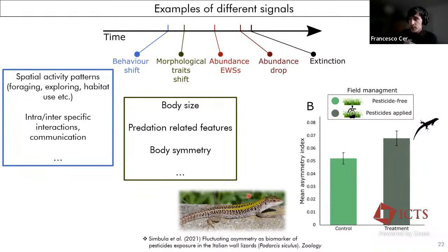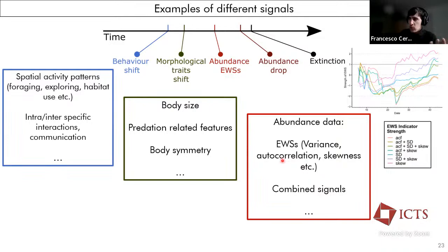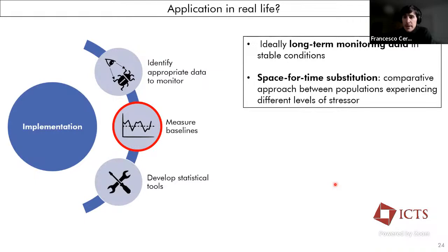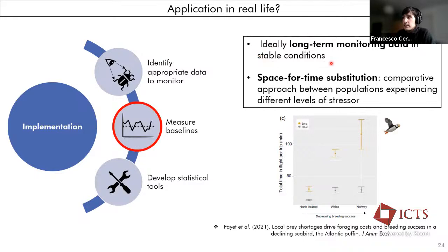As for the abundance-based early warning signals when present, we know that there are some general ones, but we can also use some combined signals by summing up the different statistical indicators. Now, another important thing to do is measure the baselines under which we can define that there is an actual change. And doing this ideally requires long-term monitoring data in stable conditions, which are very hard to find in nature. But we can try to use, for example, space for time substitution, where if you have different populations living in a stressor gradient, from less stress to more stress, we can compare those and see if, for example, like this study on Puffins did, the time spent in flight, so the behavioral shift was higher and higher when we went following the direction of the stress. So more stress, bigger behavioral shift.